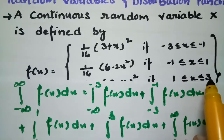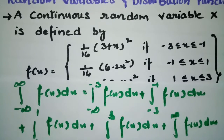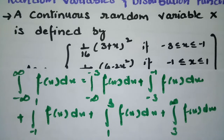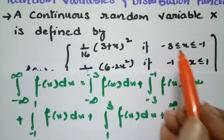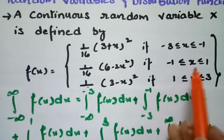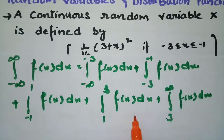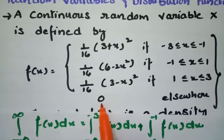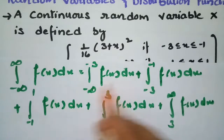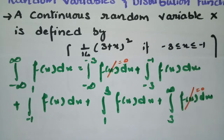Between -3 and -1, we have the value of f(x) ready. Between -1 and 1, f(x) value is ready. Between 1 and 3, f(x) value is also ready. Elsewhere, f(x) is 0. So the integrals from -∞ to -3 and from 3 to +∞ are zero, and we only need to evaluate the three middle pieces.